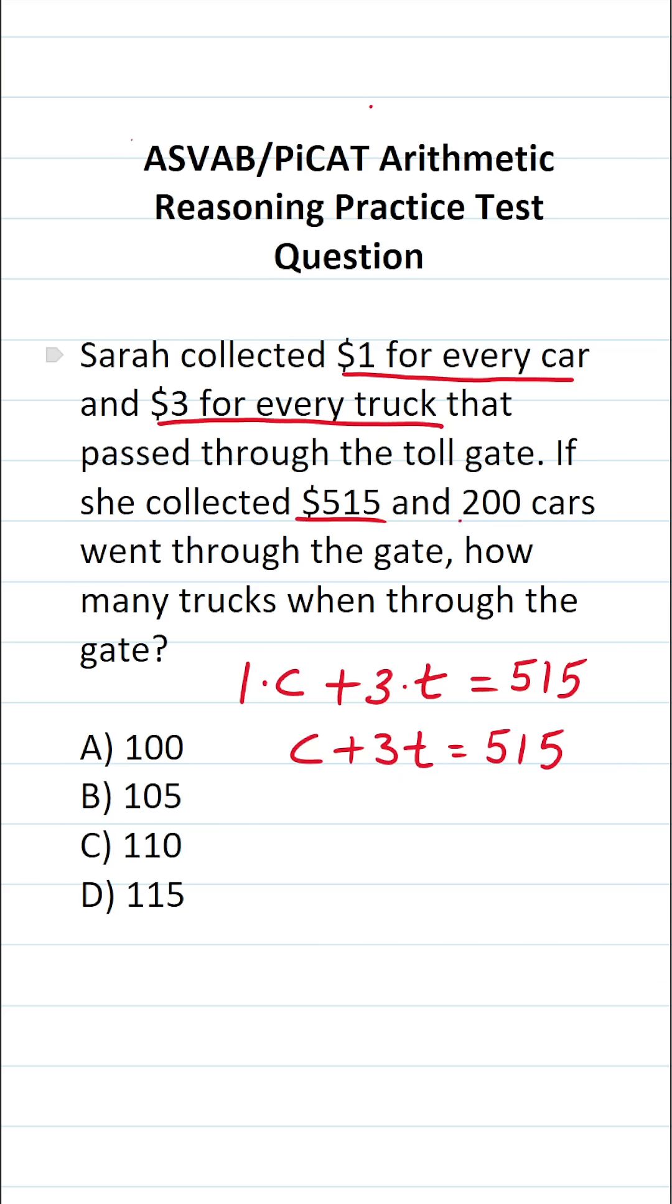What's more, we know that 200 cars went through the gate. So we know C, in other words, is 200. So this becomes 200 plus 3T equals 515.